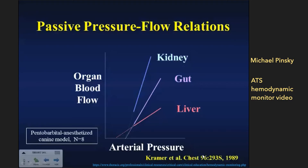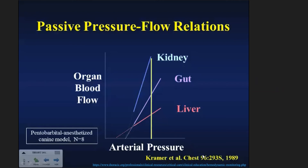The last part I want to discuss: there are different relationships of organ blood flow to arterial pressure in different organs. This is a slide directly from Dr. Michael Pinsky. Dr. Kramer, in 1989, did a study to figure out the organ blood flow to arterial pressure relationship in canine models. At a given arterial pressure, you have different organ blood flows — for example, a large proportion going to the kidney.